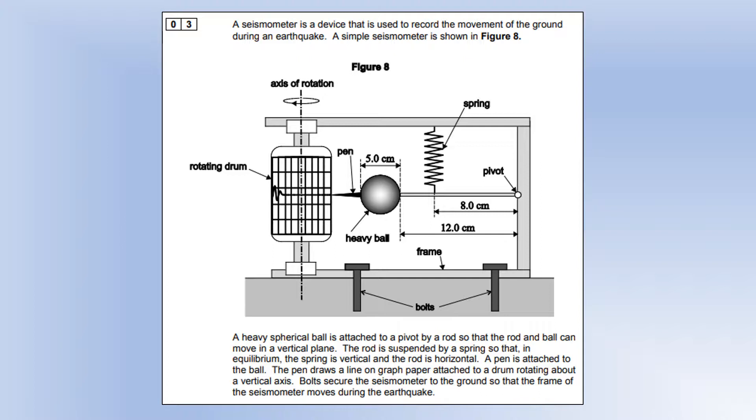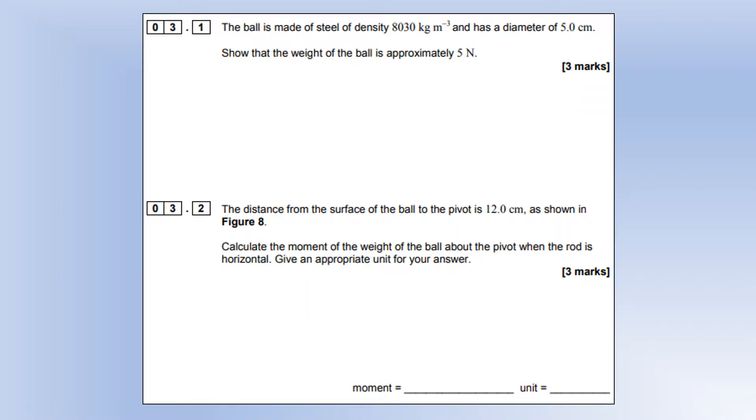The ball is made of steel with density 8030 kg/m³ and diameter 5 centimeters. Show that the weight is 5 newtons. The weight is mass times g, which equals density times volume times g. For a sphere, we use (4/3)πr³ for the volume, giving us a weight of 5.15, which is approximately 5 newtons.